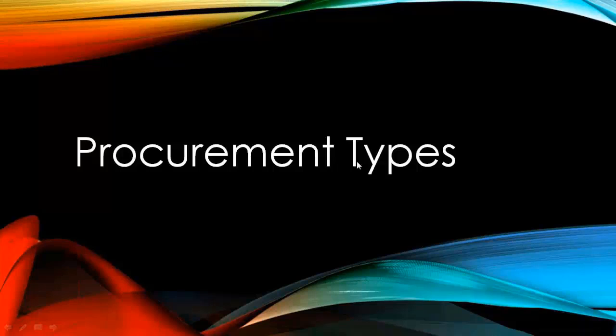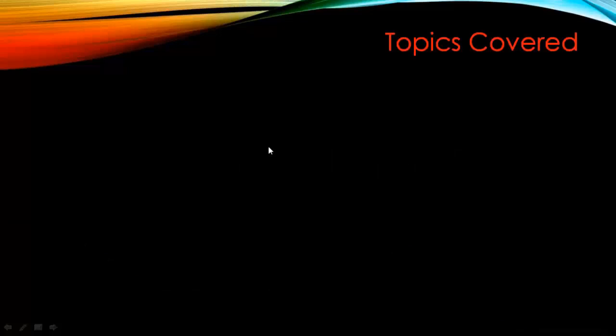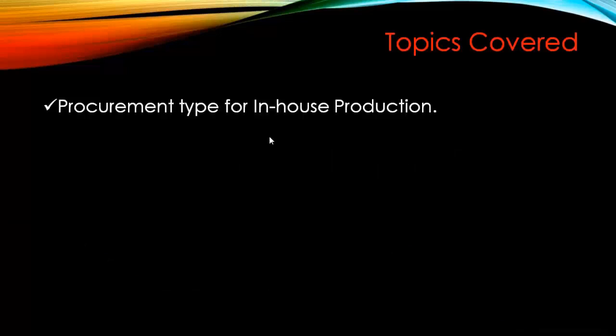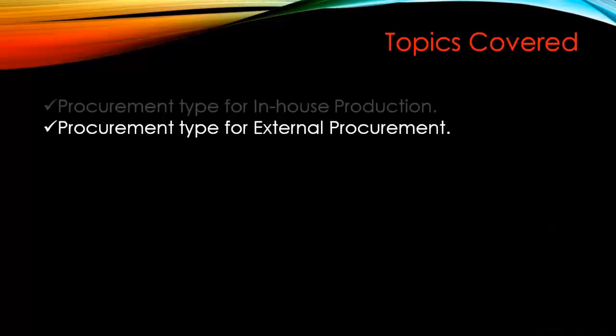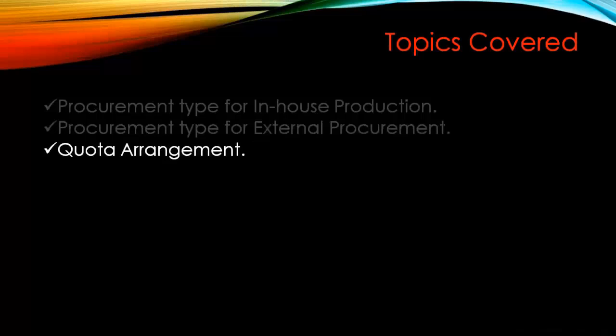Today we are going to learn about the procurement types in SAP production planning. The topics we are going to cover are: procurement type for in-house production, procurement type for external procurement, and quota arrangement. So first of all, what are the procurement types in SAP production planning?